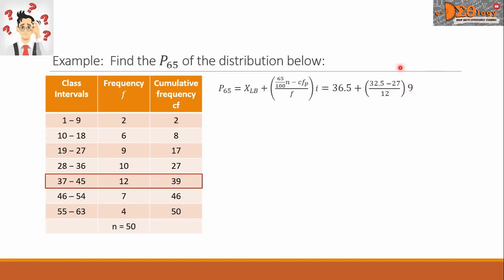Let us simplify further. Let us take the difference of the numerator. 32.5 minus 27 is 5.5. Then we multiply this 5.5 with the number 9. So we have 49.5 divided by 12 equals 4.13. We add this value and the 36.5. We will get now the 65th percentile, which is equal to 40.63.